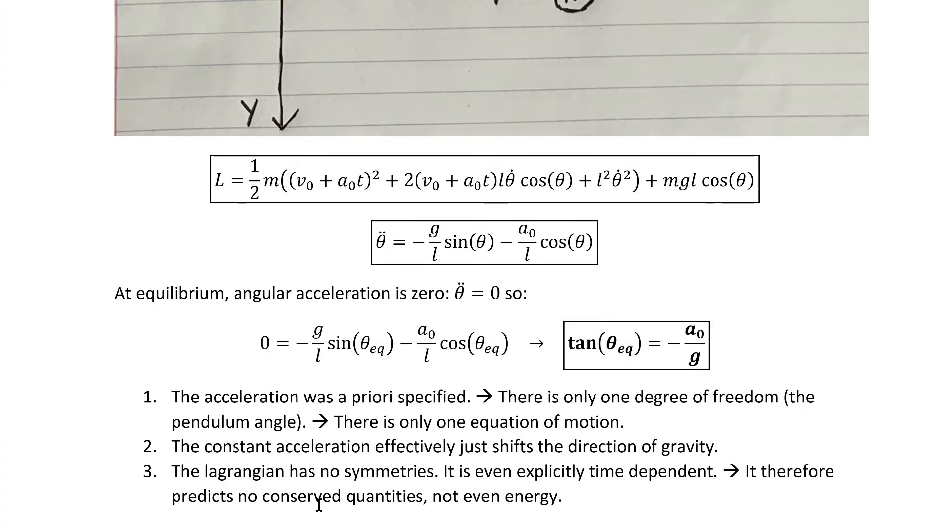The last thing to notice is that the Lagrangian has no symmetries, and therefore there's no possibility for conservation laws. First of all, we see it's dependent on theta, so there's no way for there to be invariants there that could lead to a symmetry.